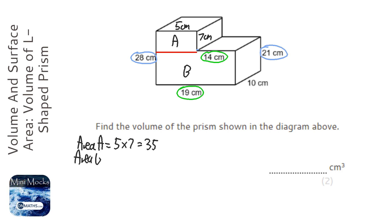Area of B - I think this is labeled, so it's 19 across and 21 up. I'll use my calculator: 19 times 21, which is 399. So the cross-sectional area